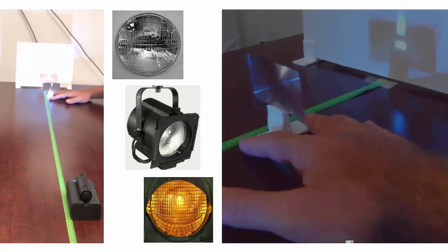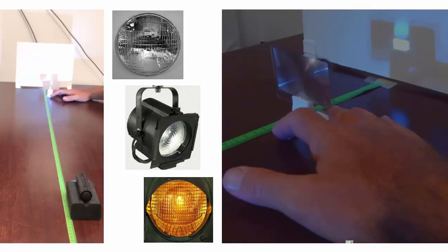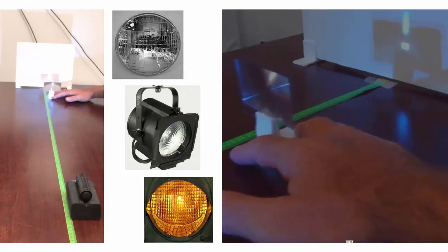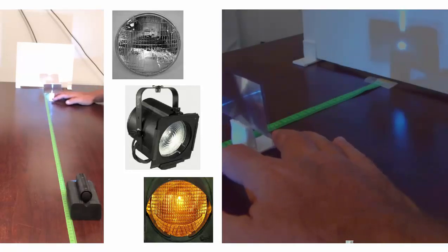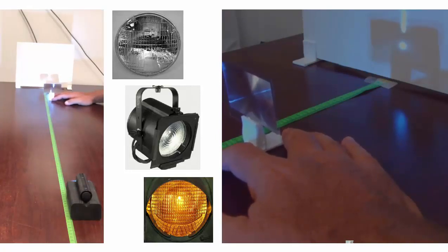So as you can see here, if I start moving this lens closer the image starts being very blurry and then also if I move it farther away, it also gets blurry. So there is a sweet spot at which we are going to have a very crispy and sharp image of the LEDs from the flashlight on the back screen.